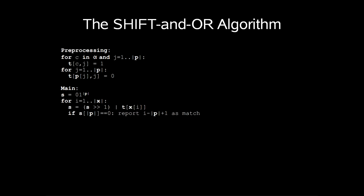So the pseudocode for shift-and-OR algorithm is very simple. For preprocessing, we for each character in our alphabet and for each index in our pattern, we set the index to 1. We then go over each index in our pattern again and set index p[j] at j to 0.